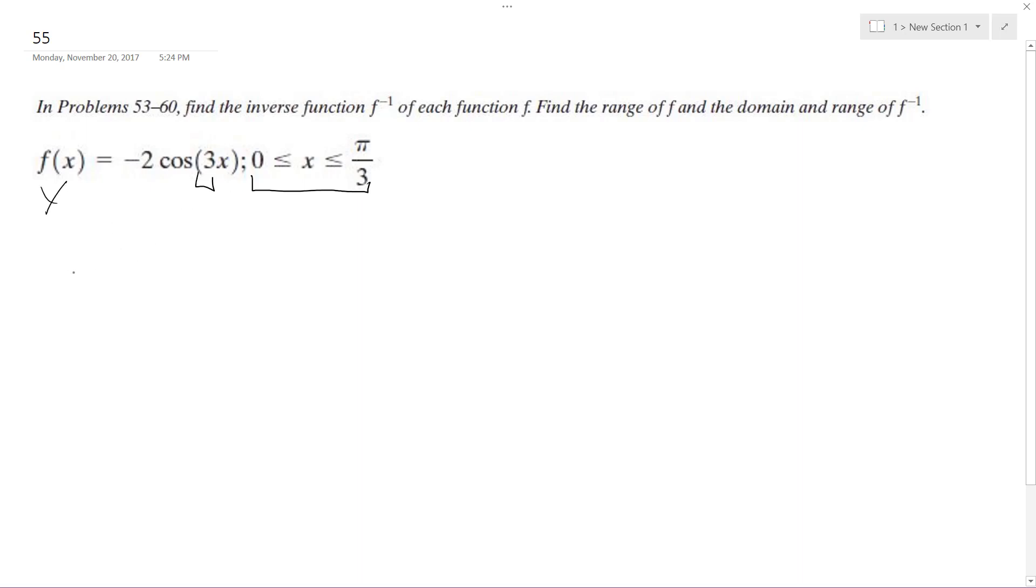So y equals this. We want to solve for y again to find the inverse. So I'm going to do cosine of 3y equals x divided by negative 2. And then I will have 3y equals inverse cosine of negative x over 2.